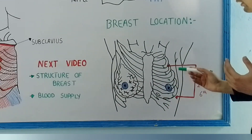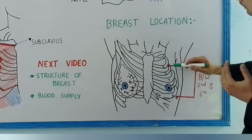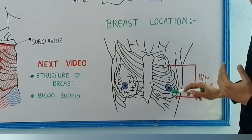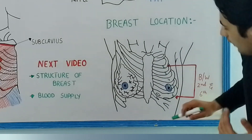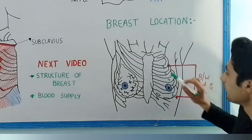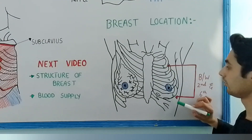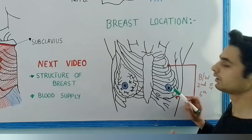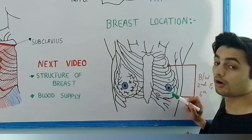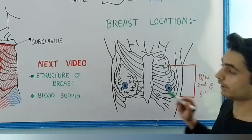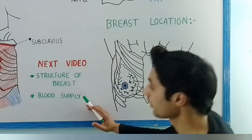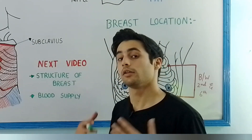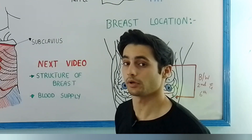Generally, the breast is between the second rib and the sixth rib. Have a look at this diagram — it is between the second and the sixth rib, and the nipple is approximately at the region of the fifth rib. In the next video we are going to learn about the structure of the breast and the blood and lymph supply.